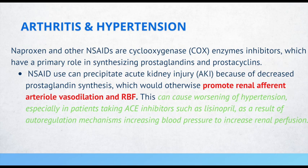As a result of autoregulation mechanisms, blood pressure increases to maintain renal perfusion. So if in a clinical scenario you have a patient with arthritis and hypertension, and their hypertension was previously controlled but worsens once you started treating their arthritis, this is something you need to consider. Look at what hypertensive and arthritic drugs they are currently taking and see if any changes can be made so that both conditions can be managed appropriately.